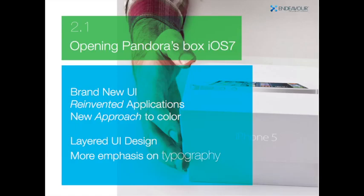Let's open Pandora's box and talk about the brand new user interface, reinvented applications, layered user interface design, the parallax effect, and increased emphasis on typography. Until now, iOS was full of skeuomorphism — meaning that apps have a look and feel that mimics real-world elements. For example, a notebook app looks like a yellow, spiral-bound notebook, but it's all electronic. Steve Jobs and Scott Forstall were big on this, but it's all now changing. This is why previous iOS had a faux glass effect and used real-world symbols like clocks, cameras, and icons, with faux wood and leather looks.